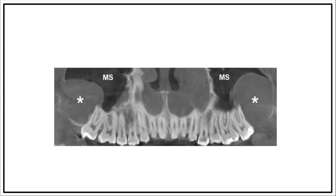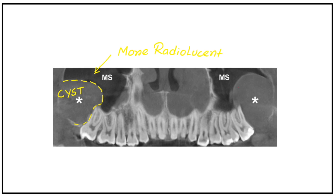Our first concept is how to differentiate a cyst and maxillary sinus when they are in close proximity. Cysts contain fluid and the maxillary sinus usually contains air, so on radiograph the maxillary sinus appears more radiolucent than cysts. Here in this panoramic CBCT image, you can see bilateral odontogenic keratocyst. This is the maxillary sinus — you can easily appreciate that the maxillary sinus is more radiolucent than the cyst.